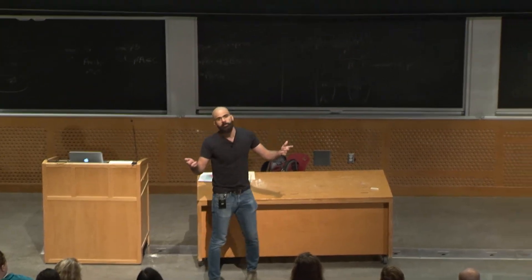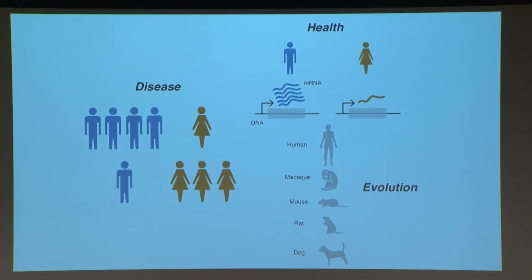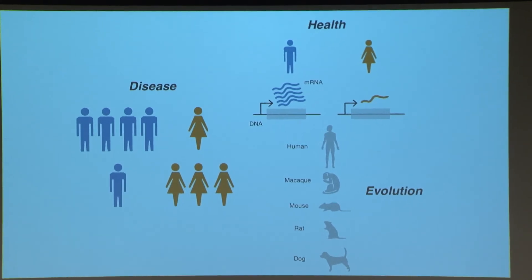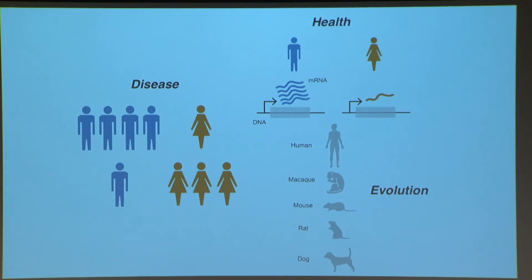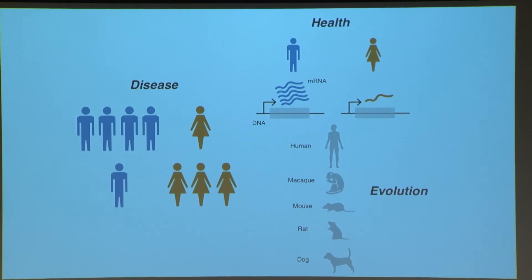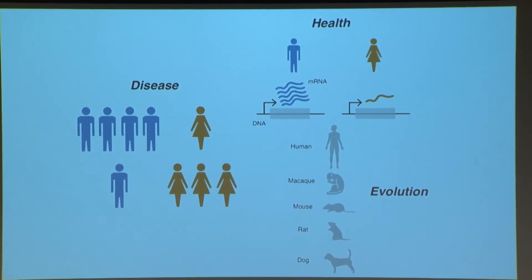Now, some of you might be asking, why these other species? Why study evolution if what you care about is sex bias in humans? Well, say you tested a drug in macaques or rodents or dogs, and it showed serious side effects in males but not in females. Would the same be true for humans? Knowing the evolutionary history of human sex differences would help us better translate results from the lab to the clinic, both for males and females.